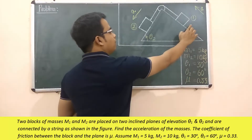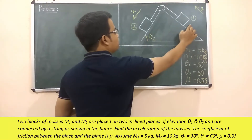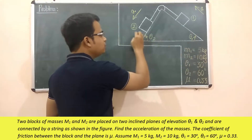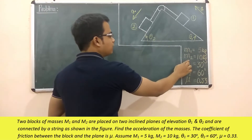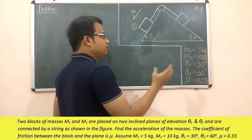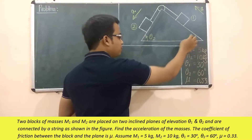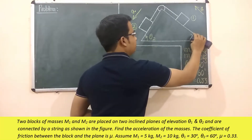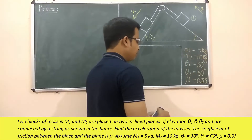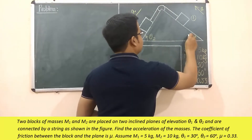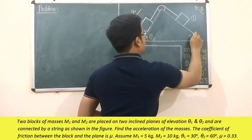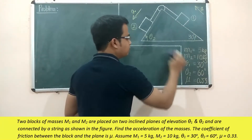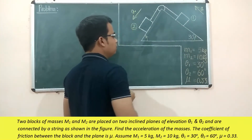There are essentially two blocks: block one and block two. The mass of block one is m1, which is equal to 5 kg, whereas the mass of block two is 10 kg. There are two inclines. Theta one has to be taken as 30 degrees and theta two has to be taken as 60 degrees.